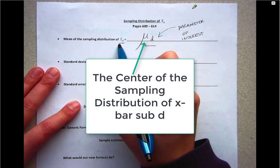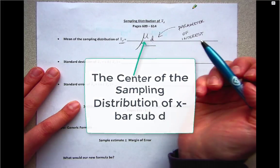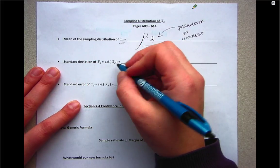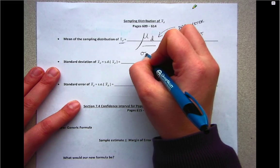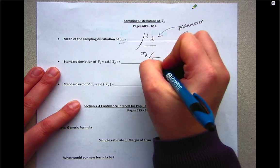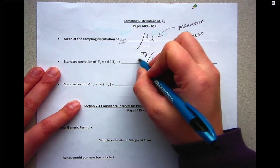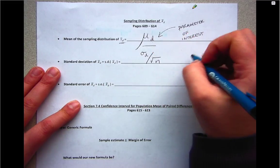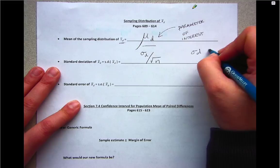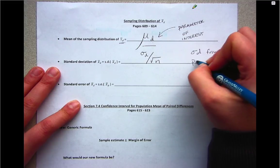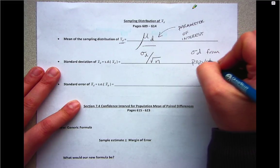Then the standard deviation of the sampling distribution uses sigma sub d divided by the square root of n. But the problem with this particular formula is that sigma sub d is from a population, and we won't know information on the population when we're trying to make inferences.